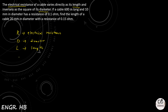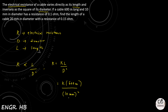So for the numerical relationship: the electrical resistance of a cable varies directly as its length and inversely as the square of its diameter. The first situation gives us a cable 600 meters long and 10 mm in diameter — be careful with the units, they must remain consistent — with a resistance of 0.1 ohm. The question asks us to find the length of a cable with diameter 20 mm and resistance 0.15 ohms.